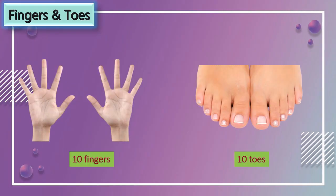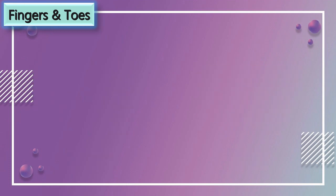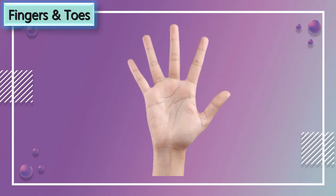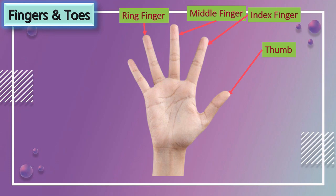Now let us see fingers and toes. We have 10 fingers and 10 toes. There are different names given to the fingers. The first one is thumb, the second is index finger, the third is middle finger, the fourth is ring finger, and the fifth is little finger.